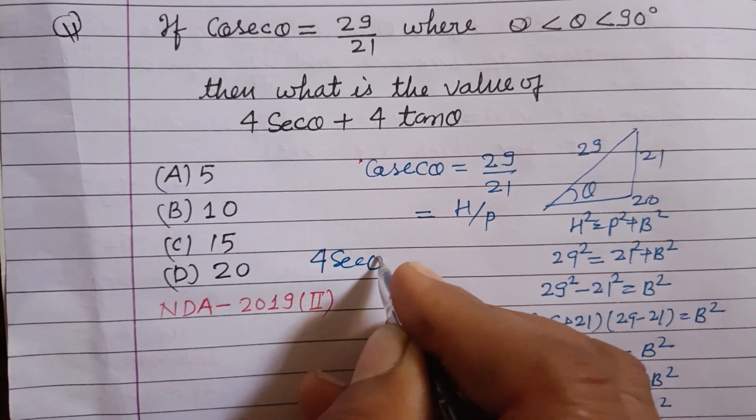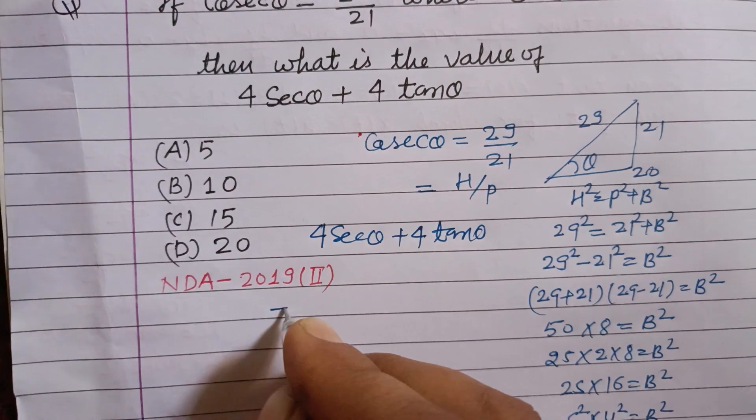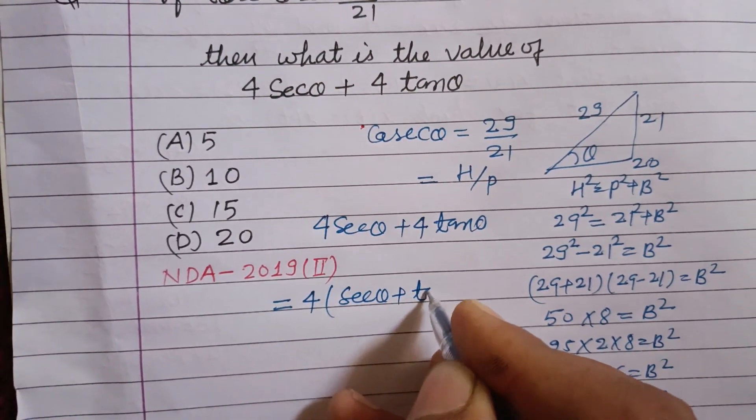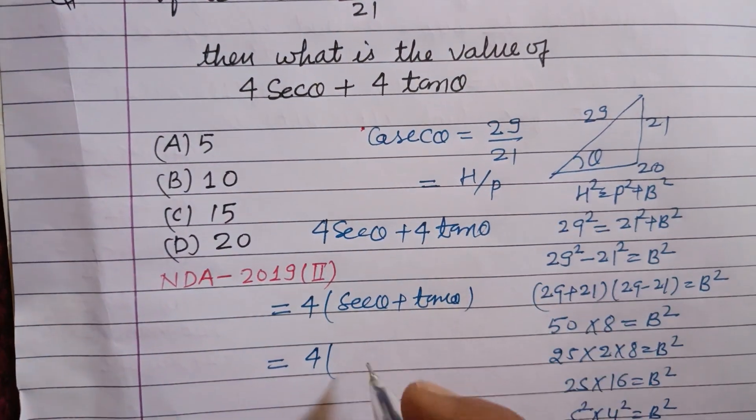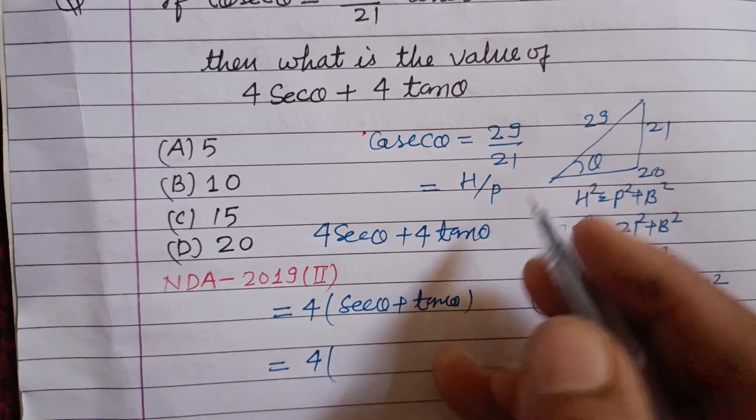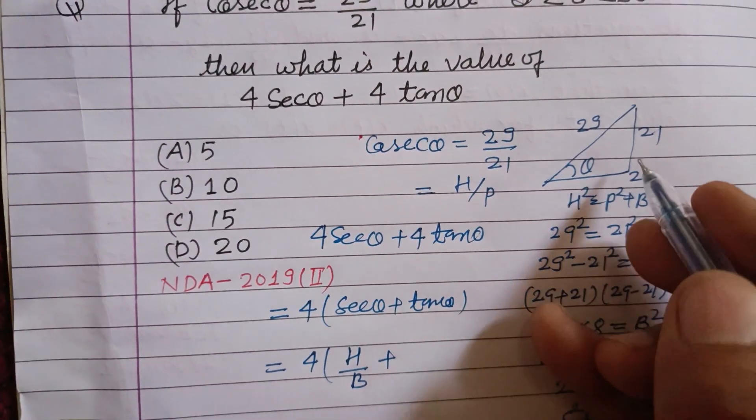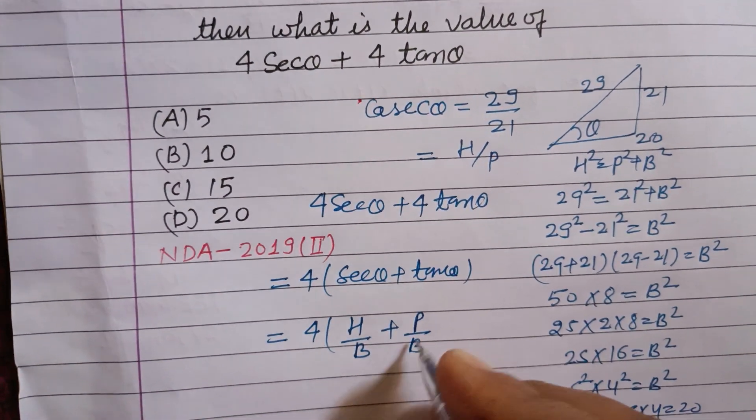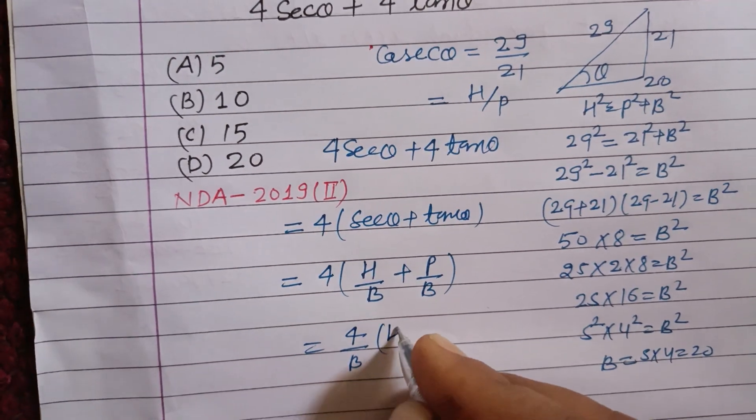Now we want to find out 4 sec theta plus 4 tan theta. Here 4 is common, so take common: 4 times (sec theta plus tan theta). Sec theta is hypotenuse over base, and tan theta is perpendicular over base.